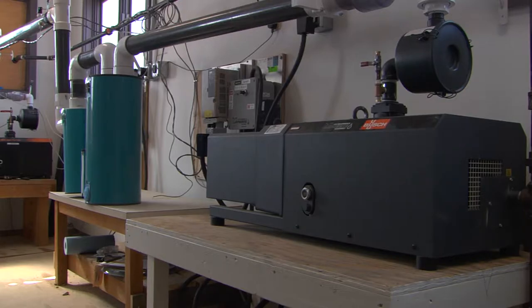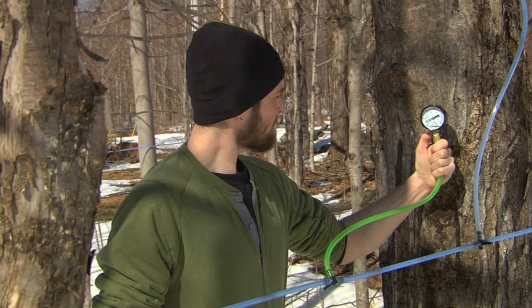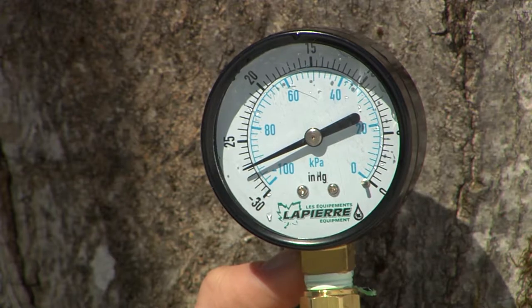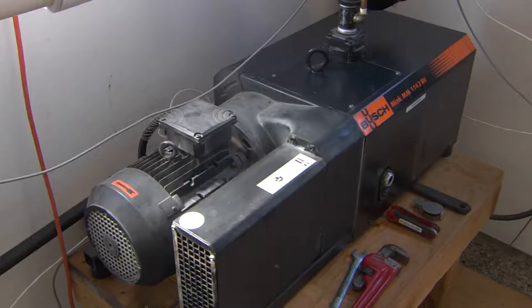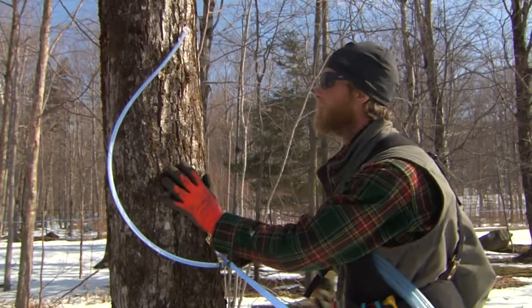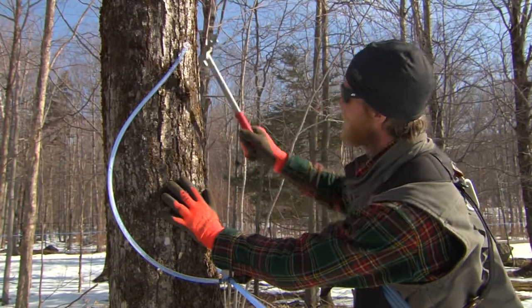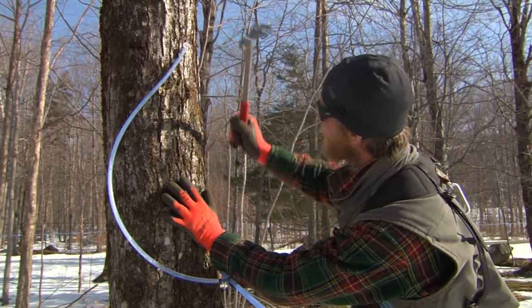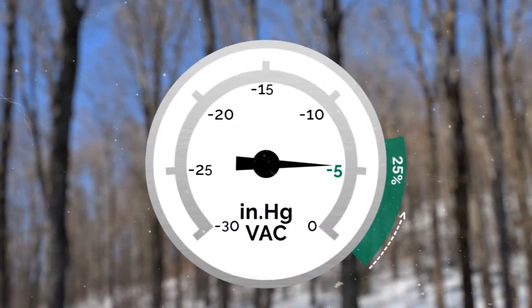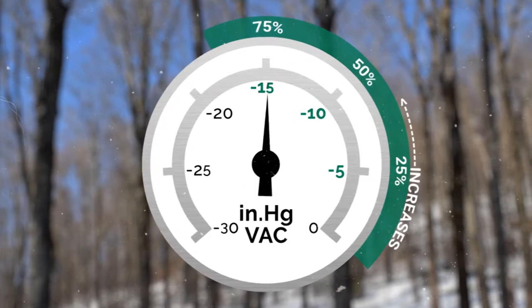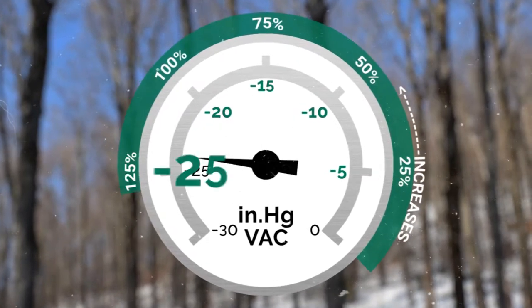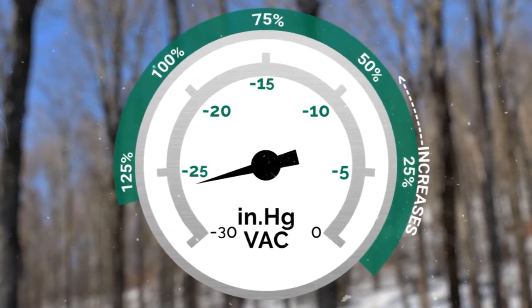Using modern pumps, the level of vacuum achievable at the tree can reach as high as 28 inches of mercury. The level will vary depending on the pump, tubing system factors, leaks, and elevation of the sugar bush. Research has demonstrated that each inch increase in vacuum results in a 5 to 7 percent increase in yield.